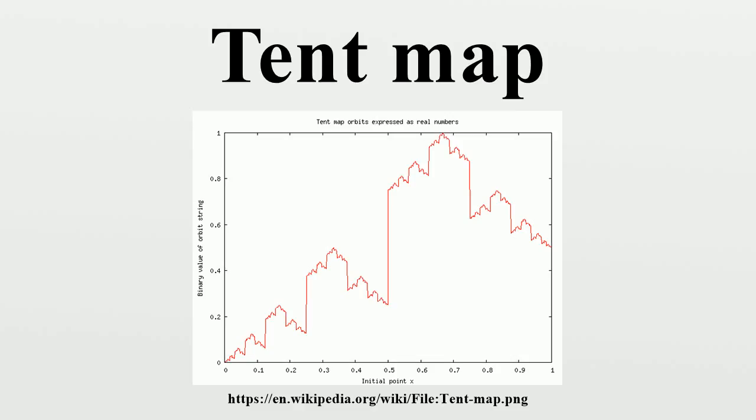If μ is greater than the square root of 2, these intervals merge, and the Julia set is the whole interval from μ minus μ² halves to μ².